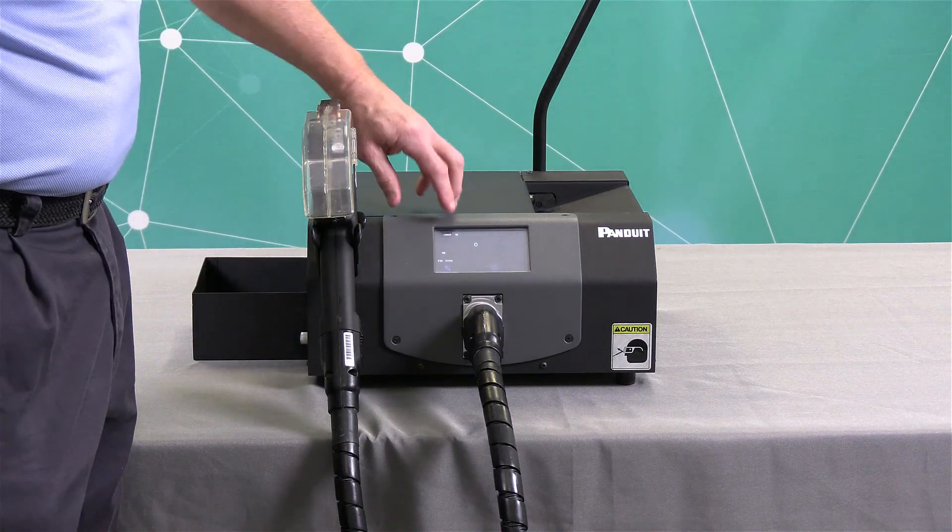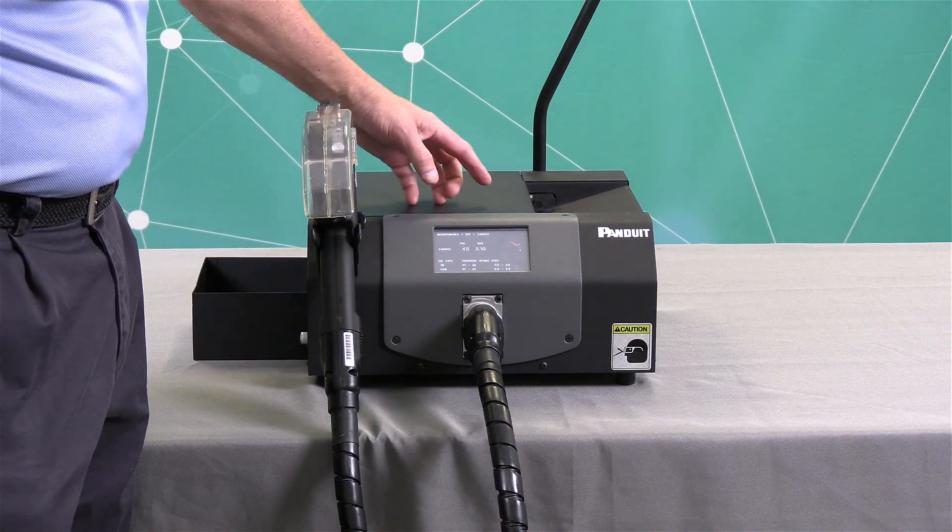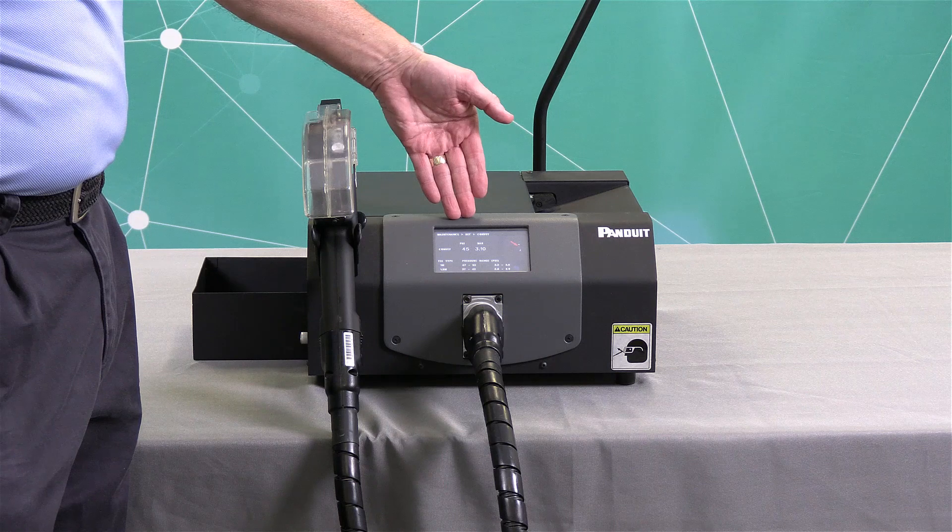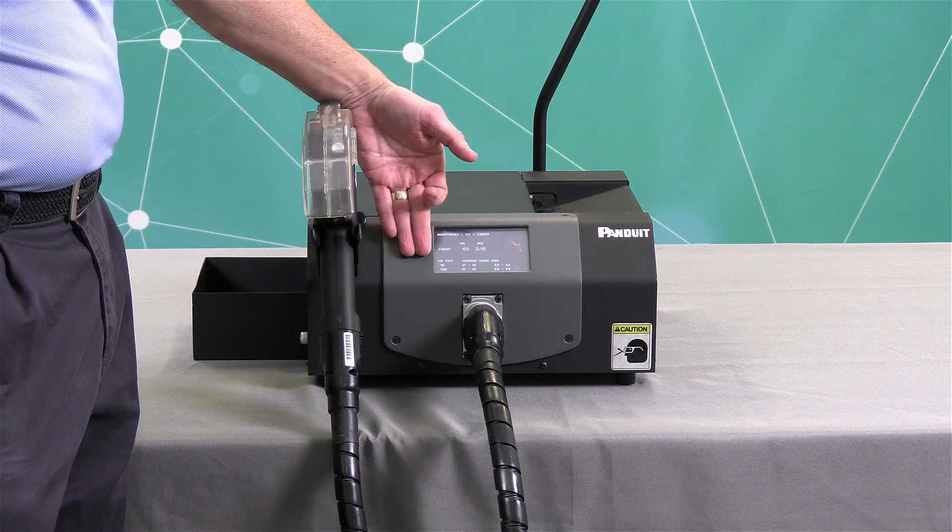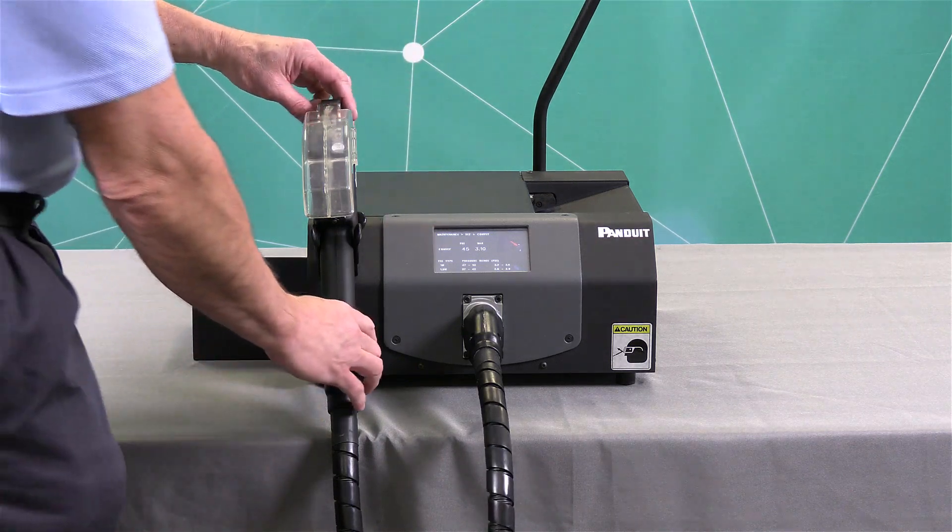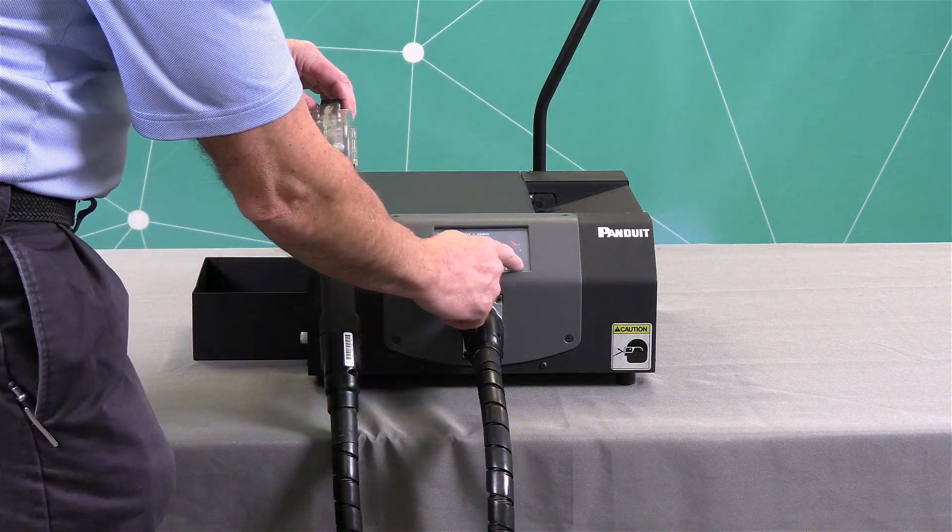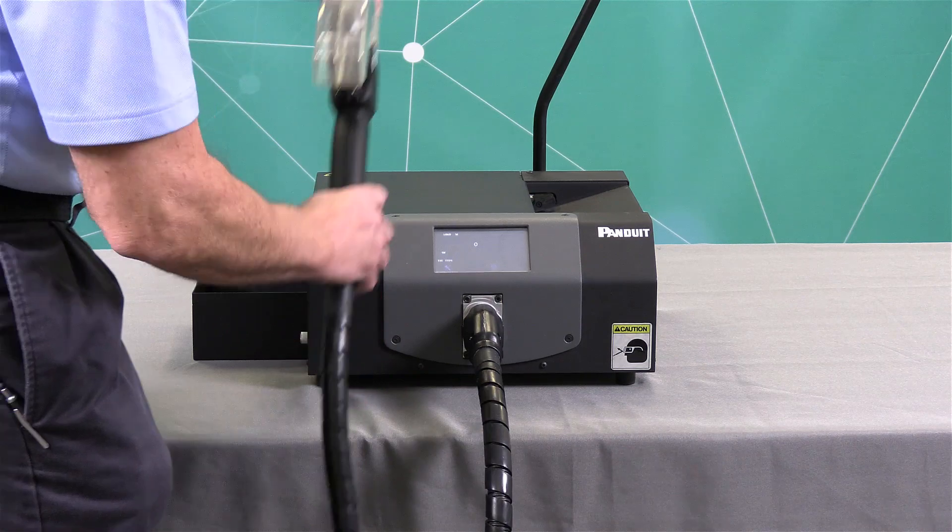If you need to adjust your convey, press the tie type button and as you can see it's set at 45 here and the recommended setting for a 1M is 47 to 52, so it's below what it should be. So if we need to make an adjustment, we're going to press the back button so we're ready to adjust and check it again.